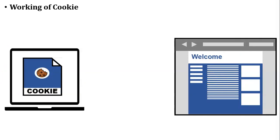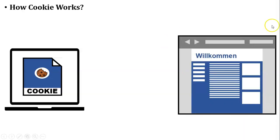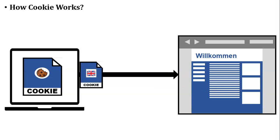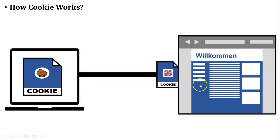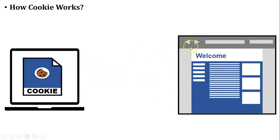After some time, the user wants to access the same website again. We know that website's default language is German. So whenever the user accesses that website, the user's browser sends the cookie to the web server. The web server reads this cookie, changes the language of that website, and displays it in English. So that is the working of a cookie.